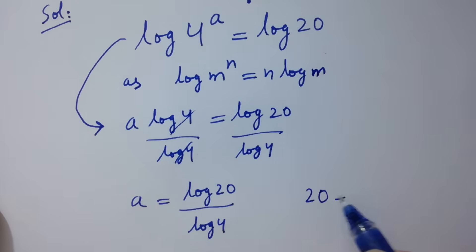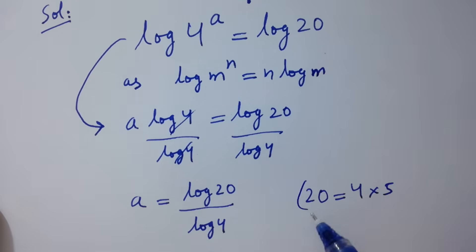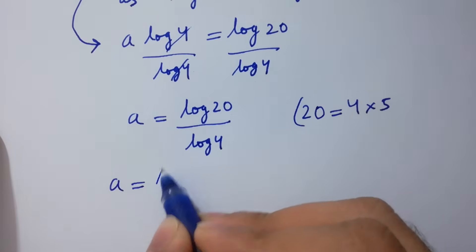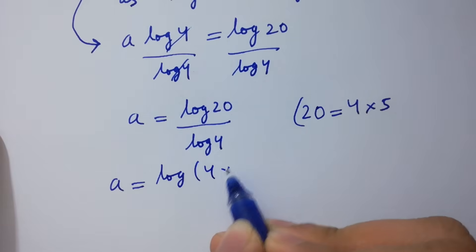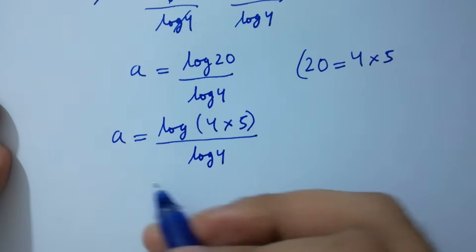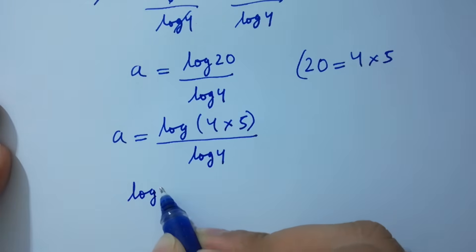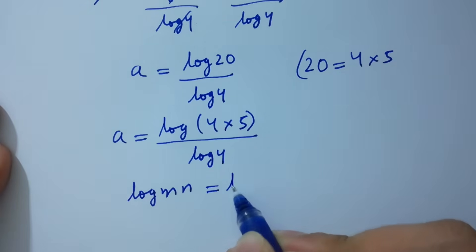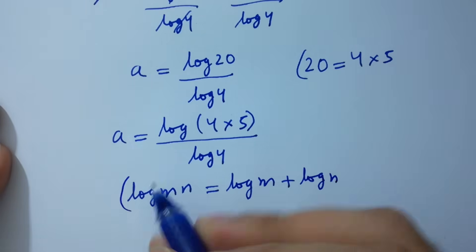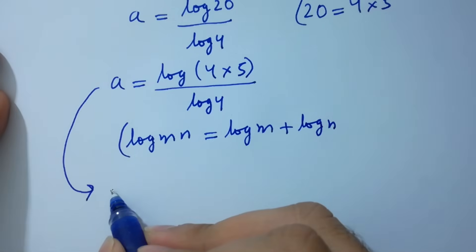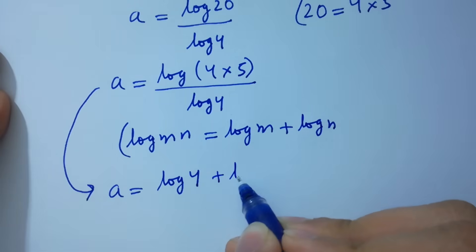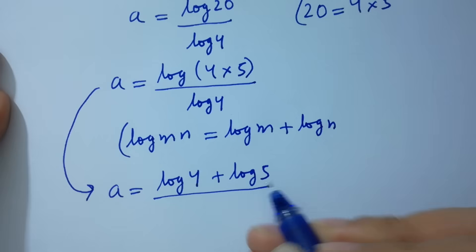20 equals 4 times 5. We have a equal to log of 4 times 5 over log 4. Using log mn equals log m plus log n, it becomes log 4 plus log 5 over log 4.